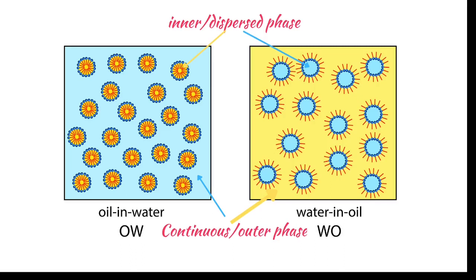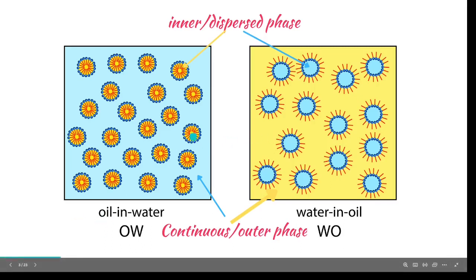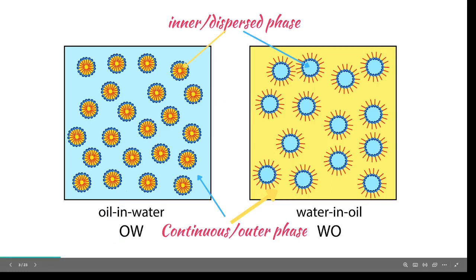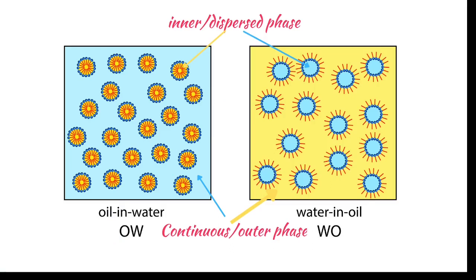These are conventional emulsions, and in all of them you have an outer phase which is the continuous phase, and the inner phase which is the discontinuous or dispersed phase. This is vice versa in oil-in-water versus water-in-oil emulsions. We are dedicating these presentations to oil-in-water emulsions, which make up about 90% of all emulsions on the market, though some principles apply to water-in-oil emulsions as well.